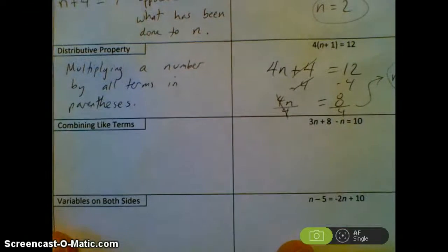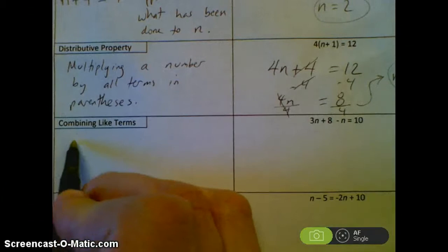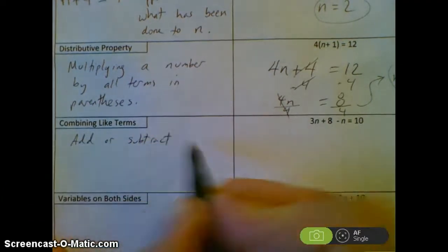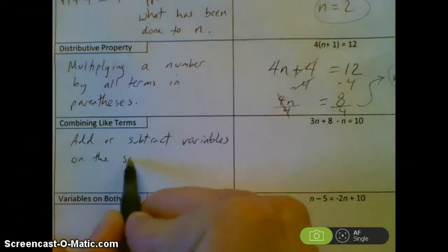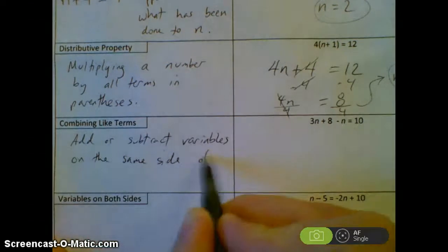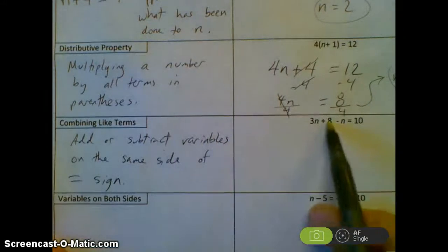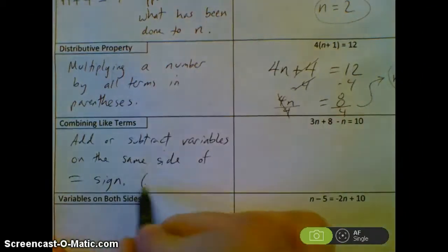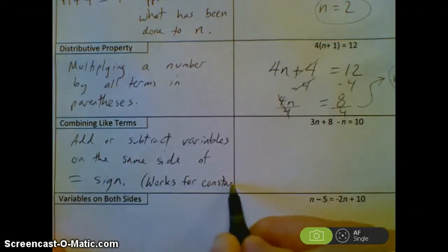The next skill is combining like terms. Usually this is where you add or subtract variables on the same side of the equal sign. You can also do this with constants — numbers that don't have any variables attached to them.